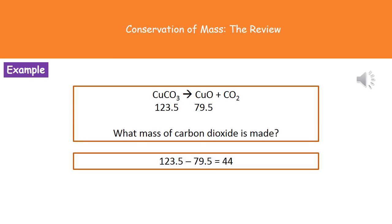The kind of question they could ask you here is to work out what mass of carbon dioxide we make. They will give you the chemical equation and two of our three masses. We've got copper carbonate on the left with a mass of 123.5, and one of our products, copper oxide, has a mass of 79.5. Carbon dioxide is the only other product, so we take the mass of our reactant, 123.5, and subtract the mass of the known product, 79.5. So 123.5 minus 79.5 gives us a mass of carbon dioxide of 44.